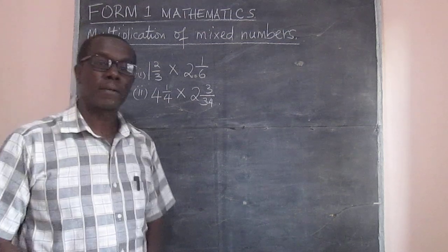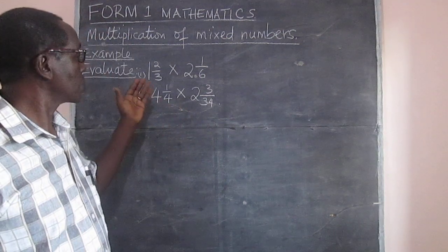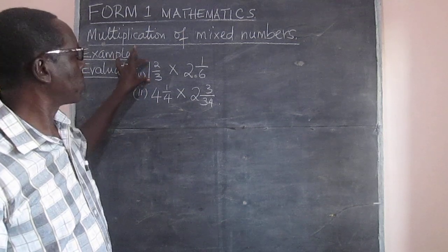We want to see how we multiply a mixed number. A mixed number is one which has an integral part, a whole number part and a fractional part.